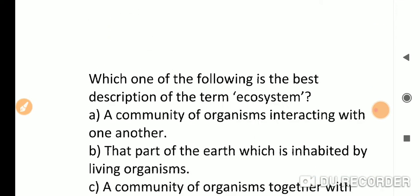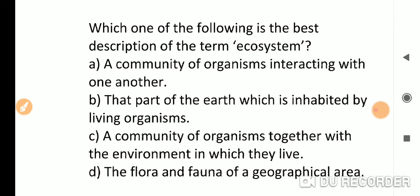Next question: which of the following is the best description of the term ecosystem? Option A: a community of organisms interacting with one another. B: that part of earth which is inhabited by living organisms. C: a community of organisms together with the environment in which they live. D: the flora and fauna of a geographical area. Ecosystem is organisms together with environment, so the correct answer will be C.